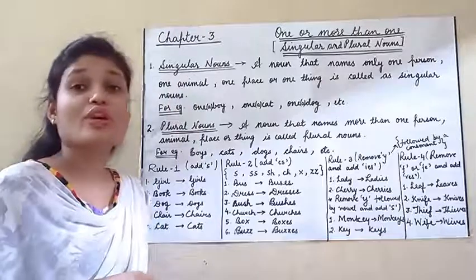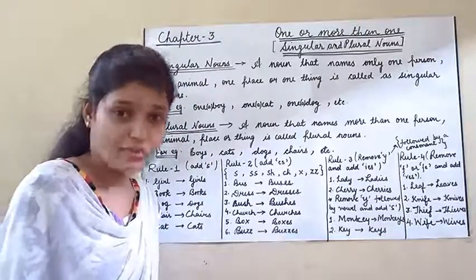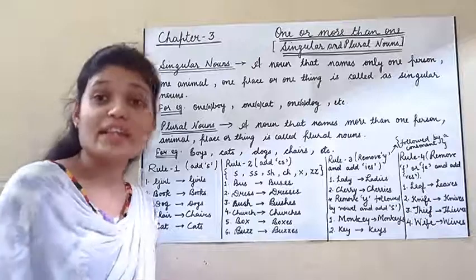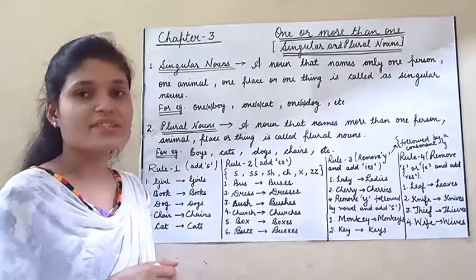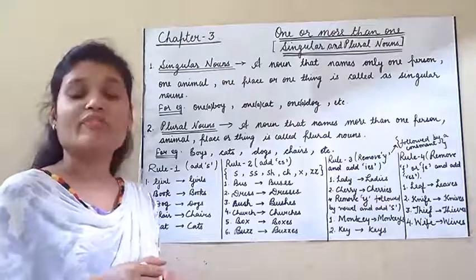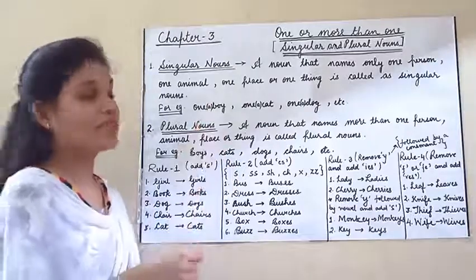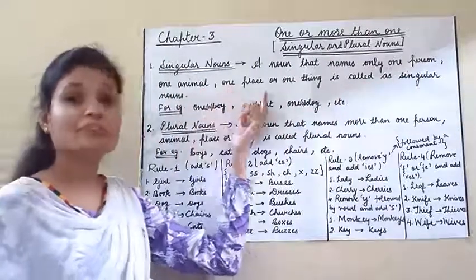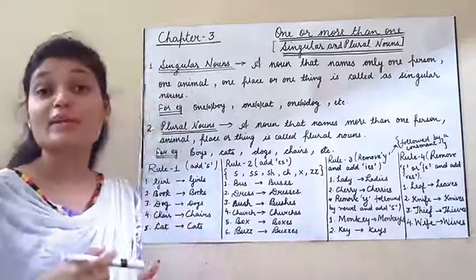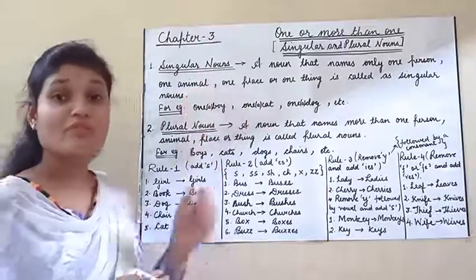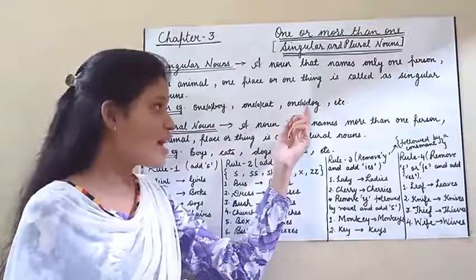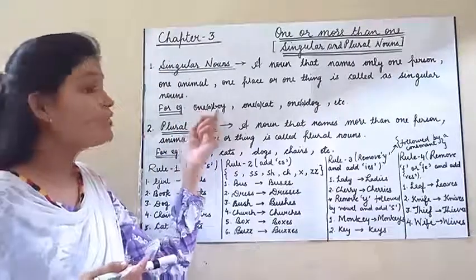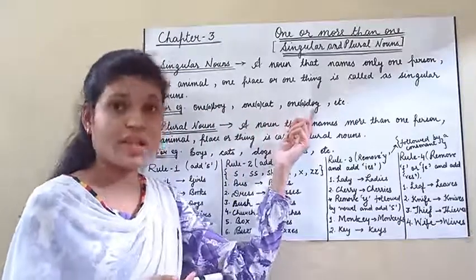Today we are going to talk about singular nouns. What are singular nouns? Singular nouns refer to one person, place, animal, or thing. Means when we talk about only one person, one animal, one place, or one thing, we call it a singular noun. For example: a boy, a cat, a dog, etc. Here 'a' means one — we are talking about one boy, one cat, one dog, and many others.